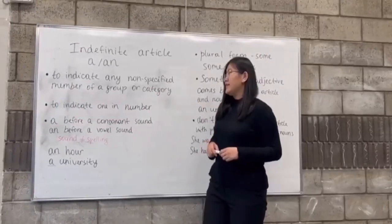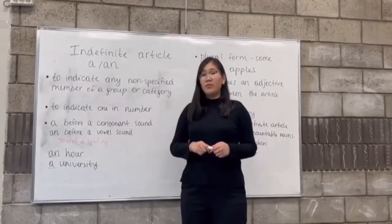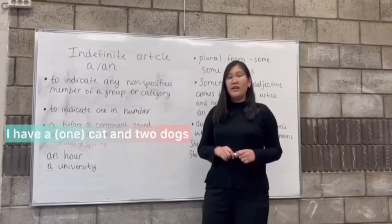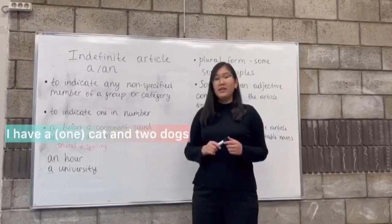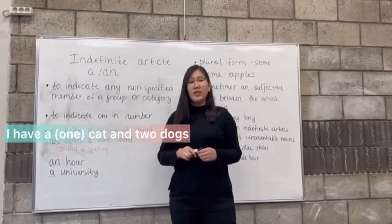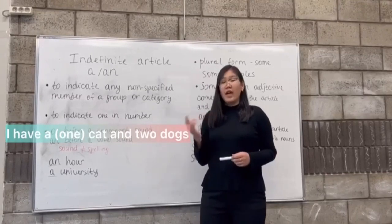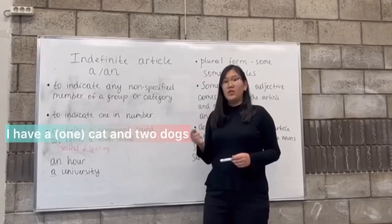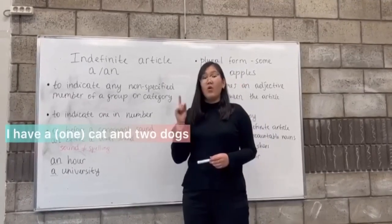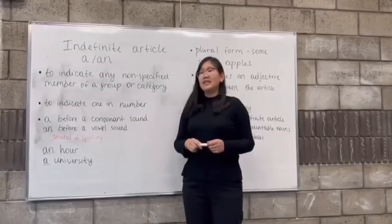Another use is to indicate the number one. For example: 'I have a cat and two dogs.' Here we see 'a cat,' which means I have only one cat.